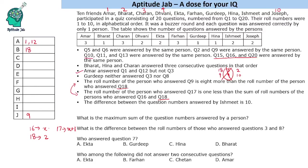Revisiting the same-person groupings: questions 10, 11, 13 were answered by the same person, and questions 15, 16, 20 were answered by the same person. We need to find two people who each answered 3 questions. Amar, Charan, and Farhan each answered 3 questions. But Amar already has 2 answers filled (1 and 12), so Amar cannot be either group's person. So the two people answering these groups are Charan and Farhan.